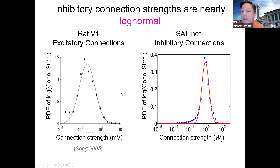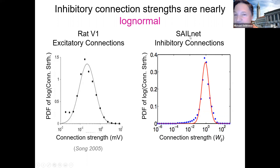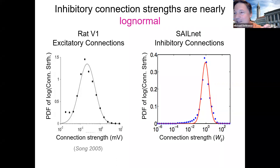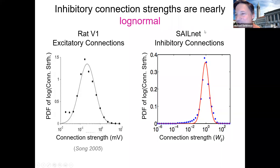We also predict a log normal distribution for connection strengths across the network. If you ask how strong the inhibitory connections are between pairs of neurons, there are some telltale departures from log normal that might be useful. In at least one of the few places where somebody has looked, they do see a similar kind of distribution for connection strengths. However, it's not exactly the right dataset — this is excitatory connections, and I'm talking about inhibitory connections. It's a lot easier to measure excitatory connection strengths than inhibitory ones.